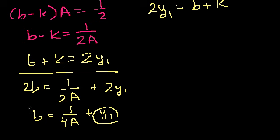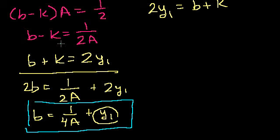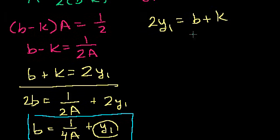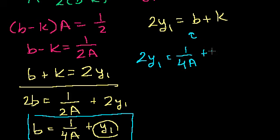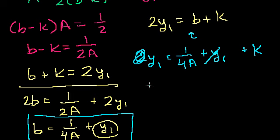And solving back for k: from 2y1 equals b plus k, substituting b equals y1 plus 1/(4A), and rearranging, we get k equals y1 minus 1 over (4A). So the directrix is 1/(4A) below the vertex, and the focus is 1/(4A) above the vertex.